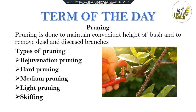The next type is skiffing, which is the lightest of all pruning methods. A removal of only the top 5 to 8 cm of new growth is done so as to obtain a uniform level of pruning surface. To summarize, pruning is done for maintaining convenient height of bush and to remove dead and diseased branches. These pruning types are mainly used in tea gardens.